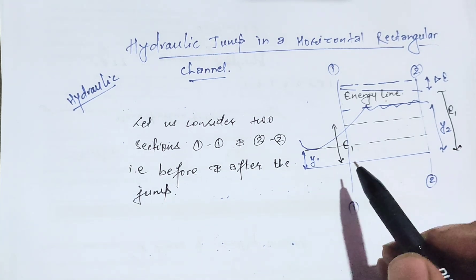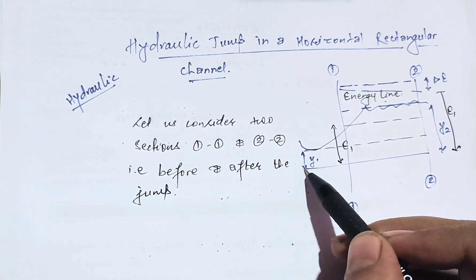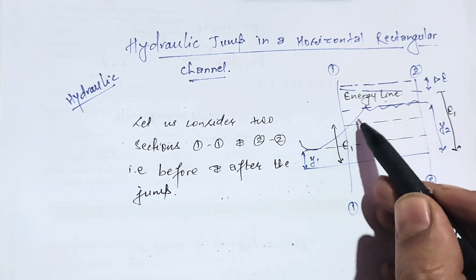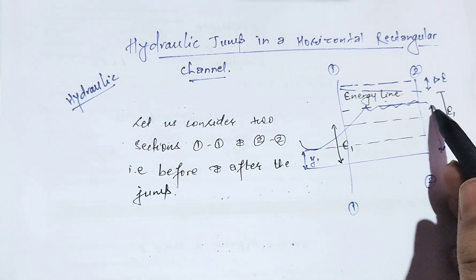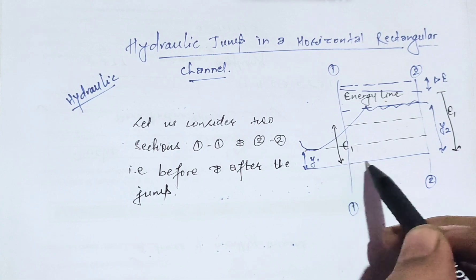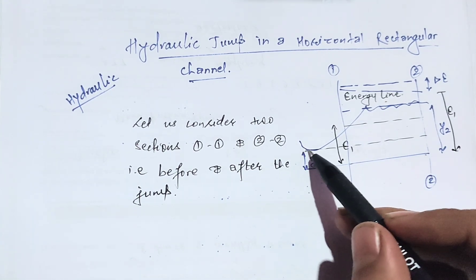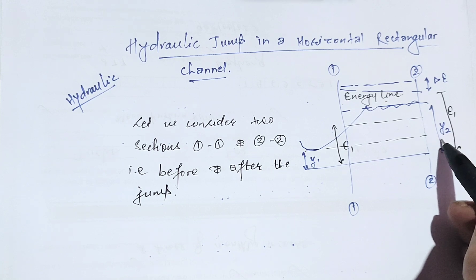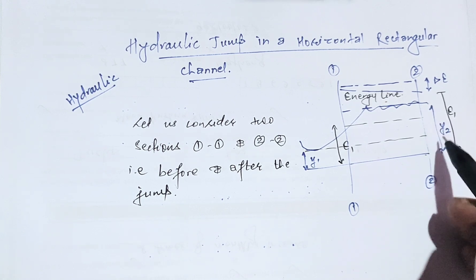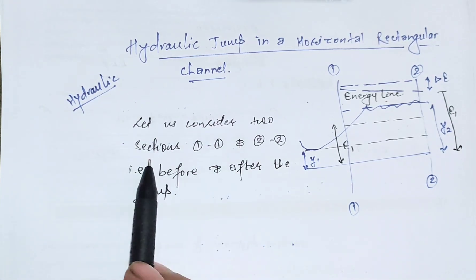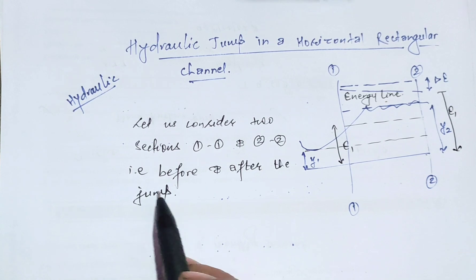Here in the figure is where the hydraulic jump occurs. This is y1, where the hydraulic jump starts, and y2 is the depth after the hydraulic jump occurrence. This is the bed of the rectangular channel. y1 is where the hydraulic jump starts and y2 is the depth after the hydraulic jump occurs.